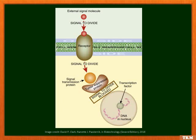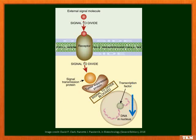The tumor suppressor protein stops the growth of cancer cells. Whenever an external signal molecule signals the cell receptor to divide, this signal transmission is blocked by the tumor suppressor protein, which blocks uncontrolled cancer cell growth. However, inactivation of the tumor suppressor gene results in uncontrolled cell growth because the tumor suppressor protein is no longer providing the signal to block cell division.